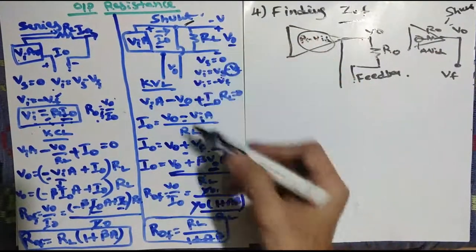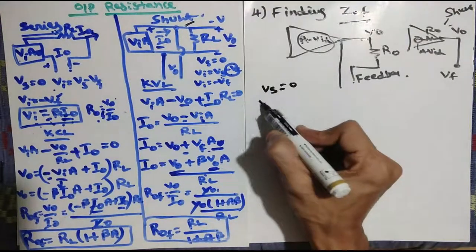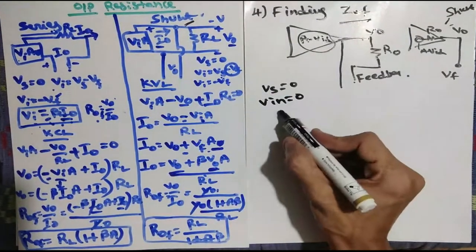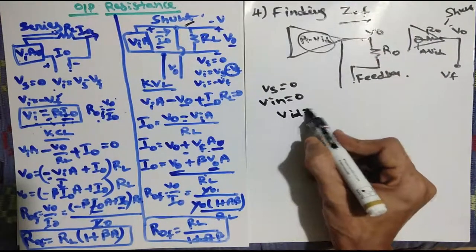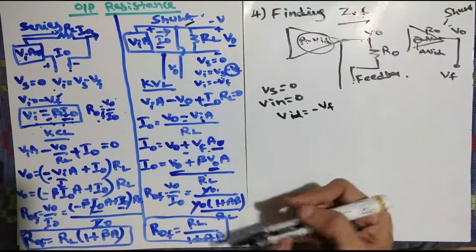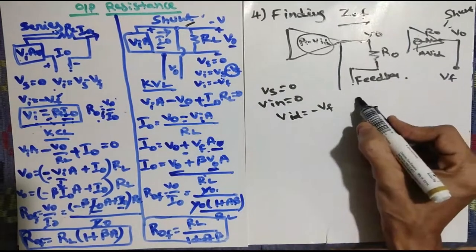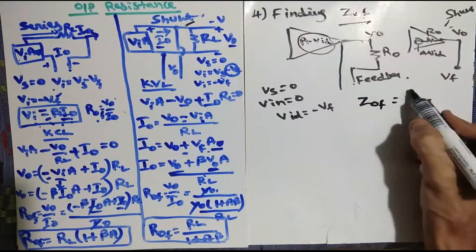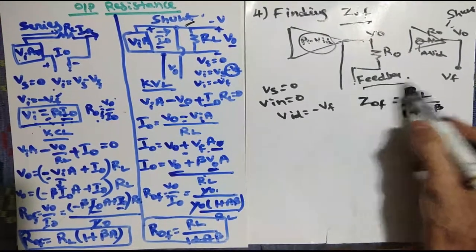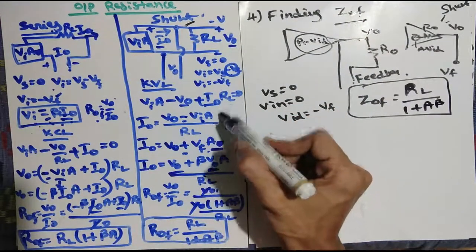First set VS equal to zero, meaning Vin equals zero. Then find VI: VI is VID, and VID equals minus VF. Apply KVL and find I_naught — the same procedure as before, nothing different. Directly, the Zof equation is: Zof = Zo divided by (1 plus Aβ).